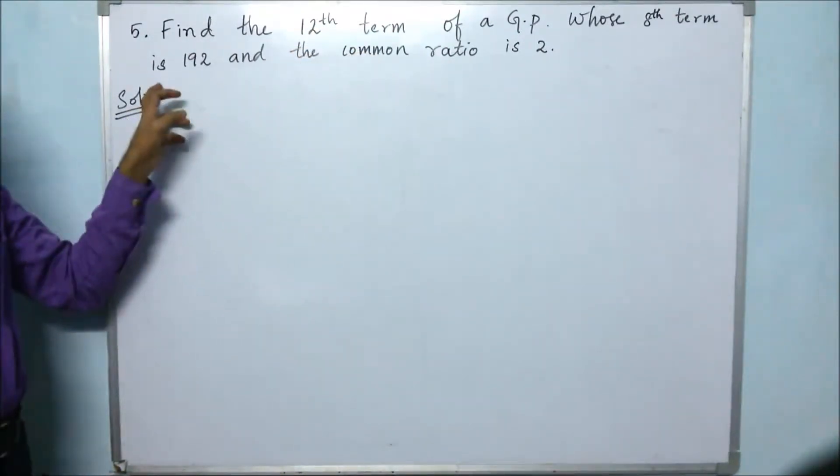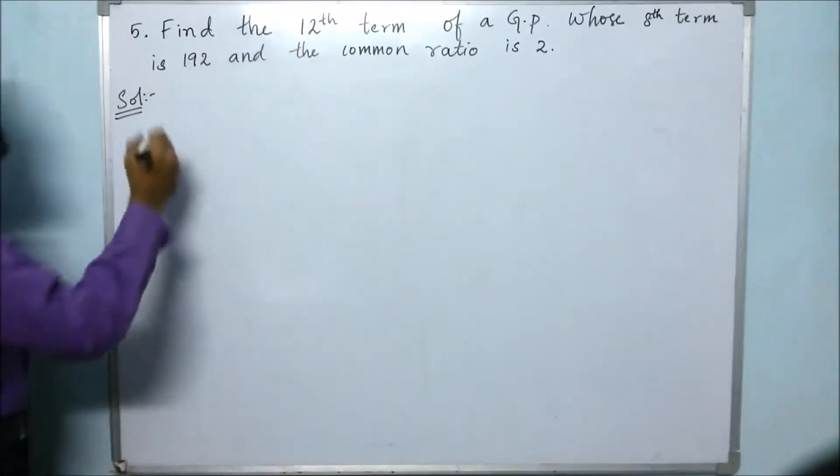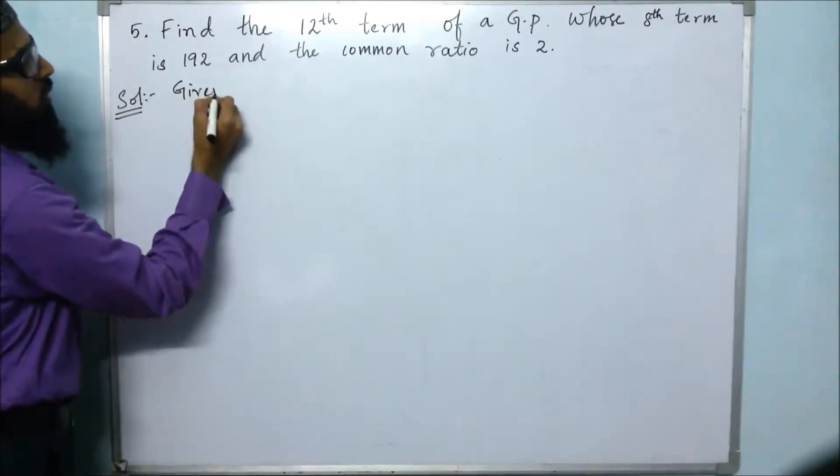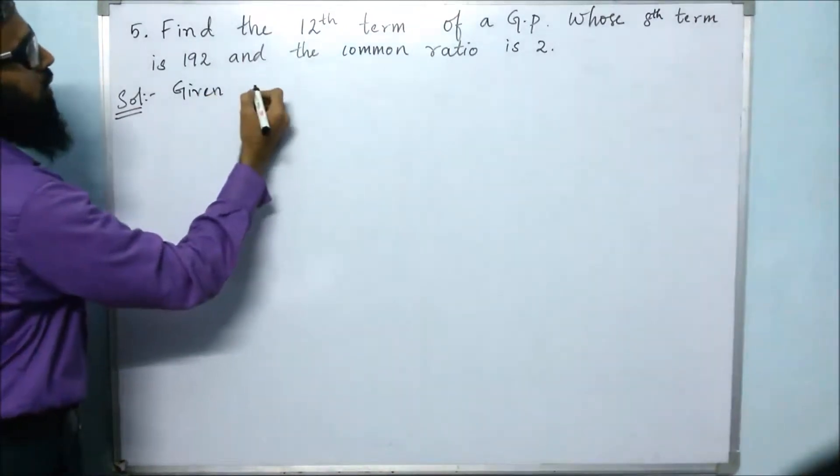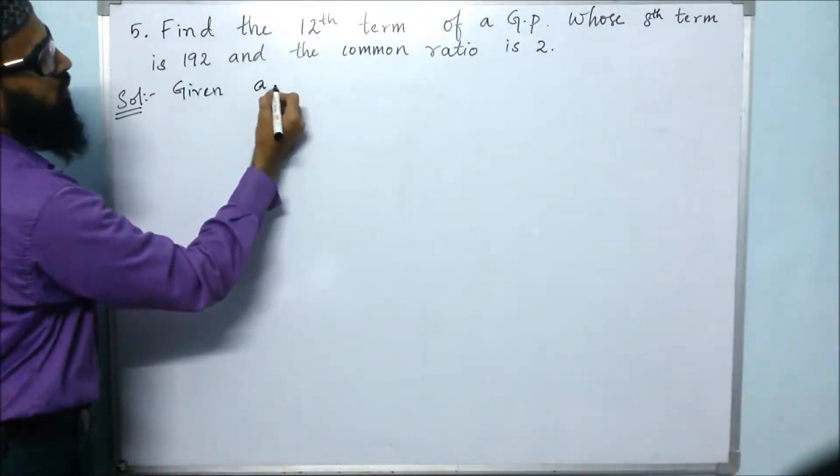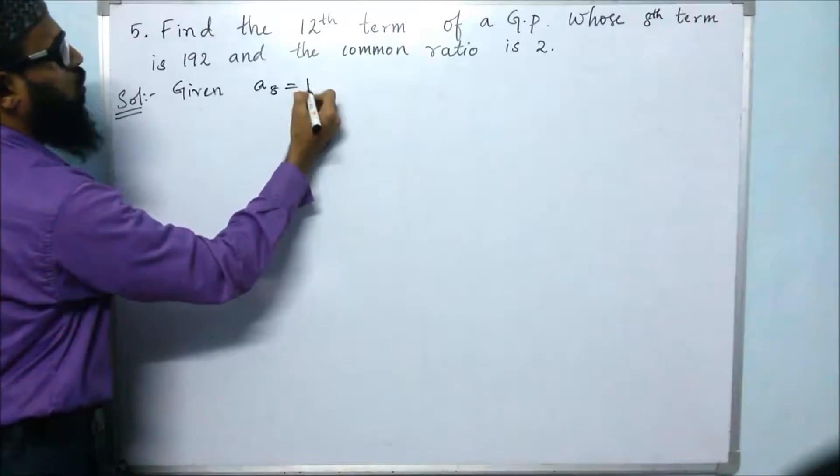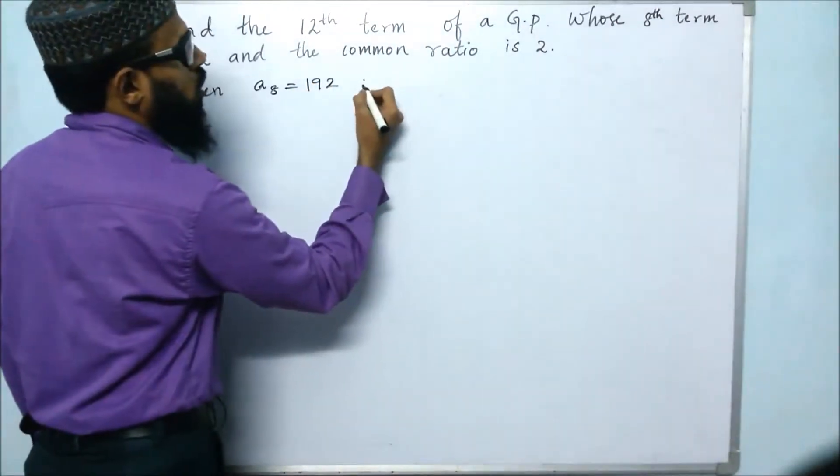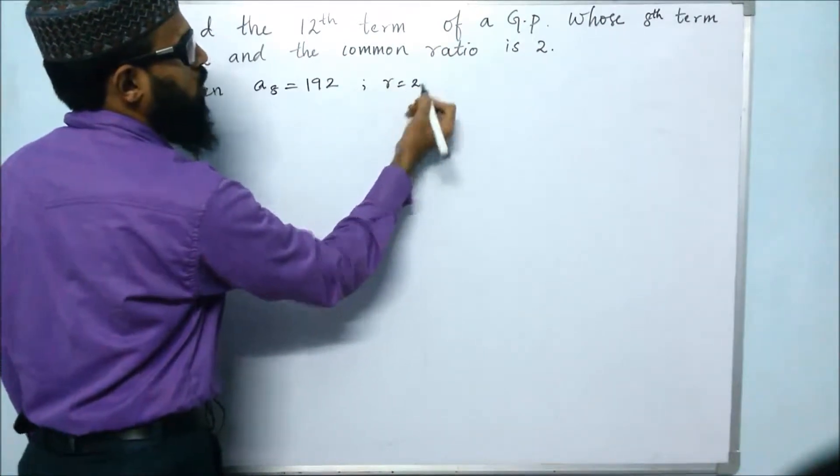They have given the 8th term and common ratio. First of all, we will start with the given information. Given: 8th term is 192 and common ratio is 2. So r equals 2.